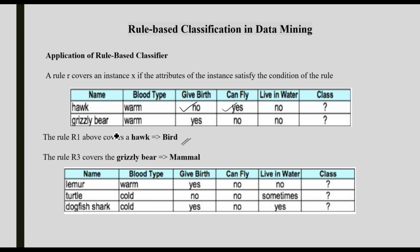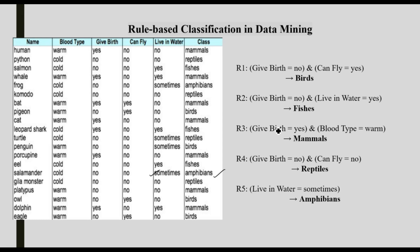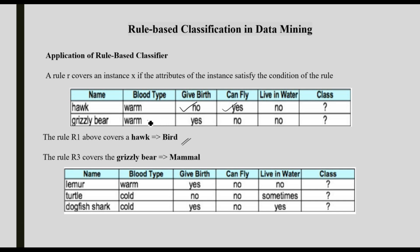Take the grizzly bear case. We apply rule R3: give birth = yes and blood type = warm. The grizzly bear satisfies this rule — blood type is warm, give birth is yes — so it is classified as mammals. If a rule is satisfied, we select that class. This is how rule-based classification works: we already have a dataset, create rules, and if the rule is satisfied, we select the class.